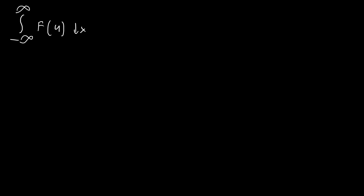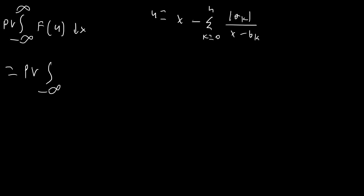First let's discuss what it is. If we have the integral from negative infinity to infinity of f(u) dx, where u is equal to x minus the sum from k equals 0 to n — for any n — of |a_k| over (x minus b_k), we can say that the principal value of this integral is equal to the principal value of the integral from negative infinity to infinity of f(x) dx.